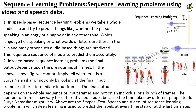The number of frames may vary from different video inputs because the time taken by different people to do Surya Namaskar might vary. The three steps — text, speech, and video — are types of sequence learning problems in which deep learning is used to predict the labels at every time step or at the last time step.